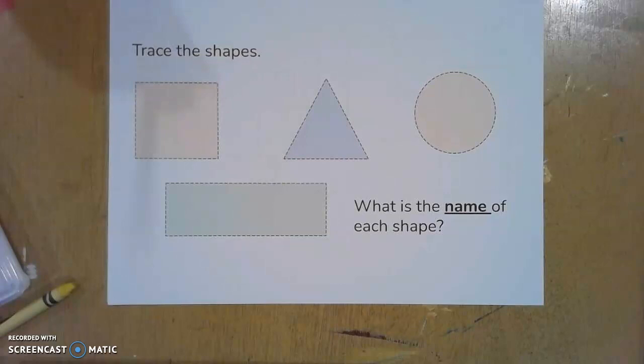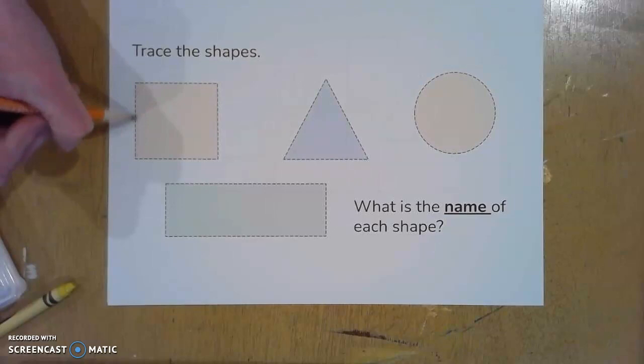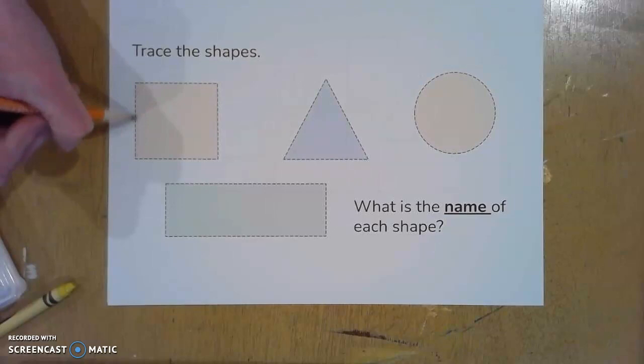I would start with this page, and with a pencil, have your child warm up by tracing each of the shapes and identifying them. This is a good time to figure out which shapes we know and shapes that we still need to work on.